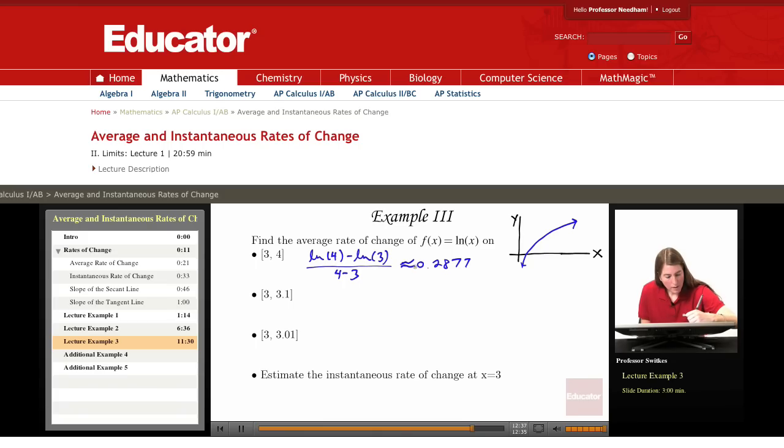On the second interval, we have ln of 3.1 minus ln of 3 divided by 3.1 minus 3. Throwing this into a calculator, we get the following. I'm getting about 0.3279.